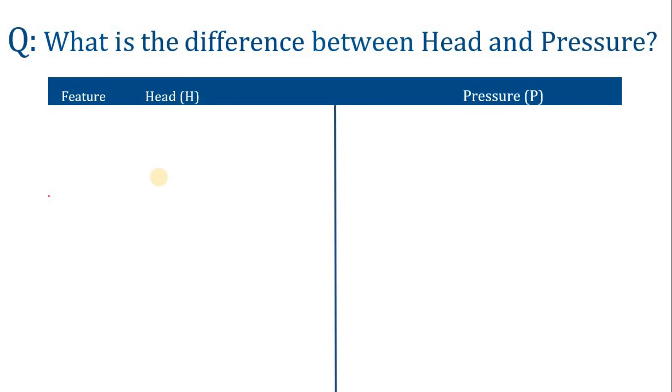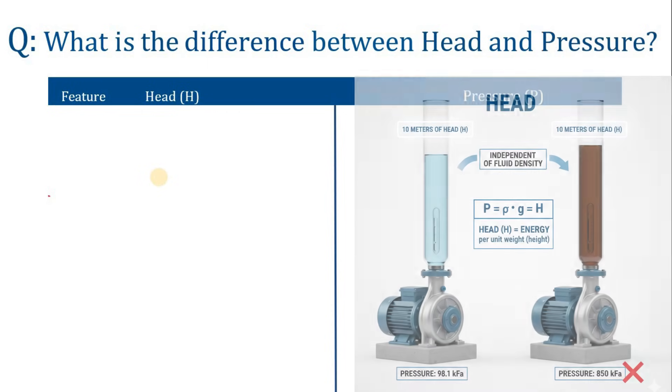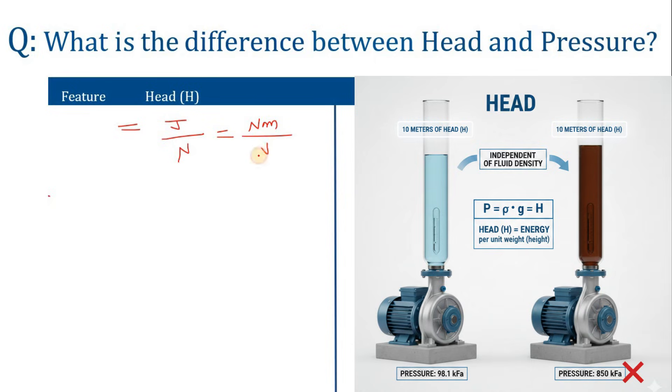When we define head, head is energy per unit weight. The unit of energy is joule divided by weight, and the unit of weight is newton. Joule can be written as newton meter, and there is newton, so newton to newton cancels. Now what is the unit we get? Meter.